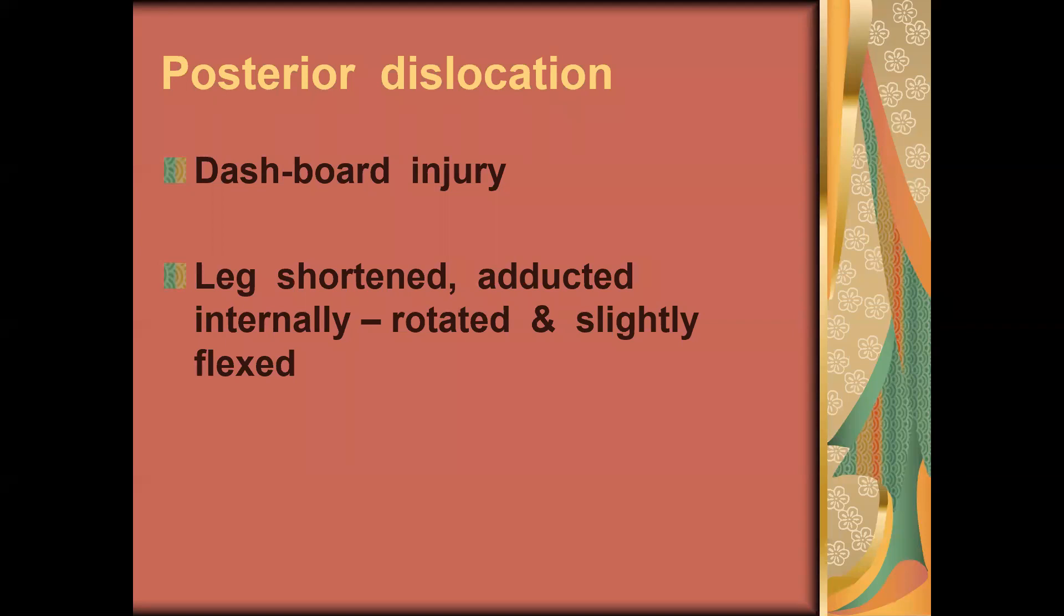The patient with posterior hip dislocation will have a characteristic posture. The leg will be shortened, adducted, and internally rotated. We can diagnose dislocation of the hip even before the x-ray by observing this characteristic position.